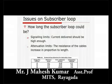We discuss the issues on subscriber loop. From the point of view of economy, it is desirable that the subscriber loop lengths are as long as possible so that a single exchange can serve a large area. But two factors limit their length: first, signaling limits, where the current delivered should be high enough; and second, attenuation limits, where the resistance of the cables increases in proportion to the length of the cables.